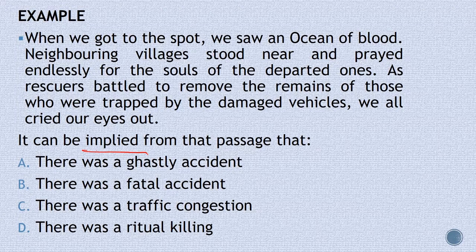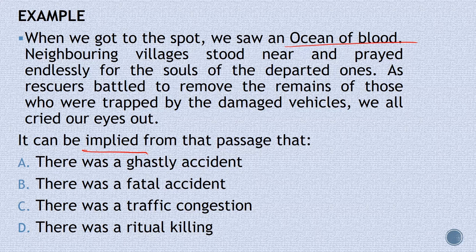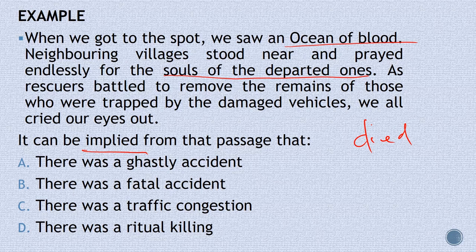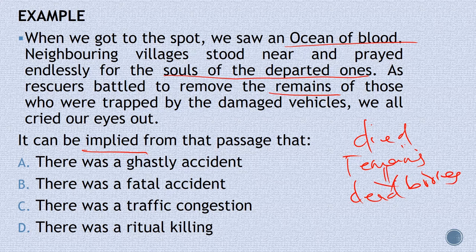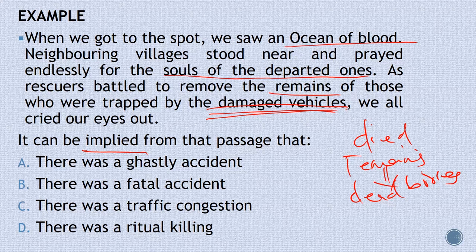Let's break down a sample passage: 'When we got to this spot, we saw an ocean of blood. Neighboring villagers stood near and prayed endlessly for the souls of the departed ones. As rescuers were battling to remove the remains of those who were trapped by the damaged vehicle, we all cried our eyes out.' Key pointers: 'ocean of blood,' 'souls of the departed' — some people have died, death has taken place. 'Remains' means dead bodies. 'Damaged vehicle' — there is an accident.